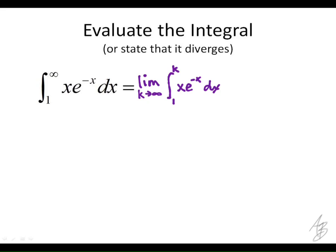You guys remember that? In this example here, if we let u equal x and dv equal e to the negative x dx, that's going to satisfy what we want here.